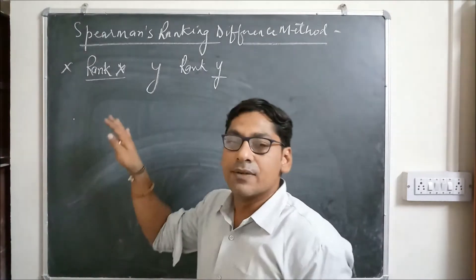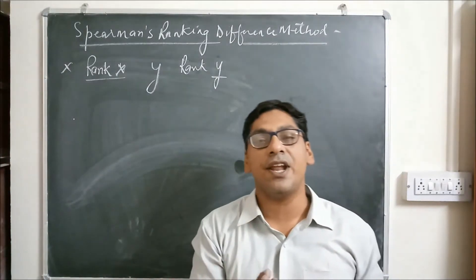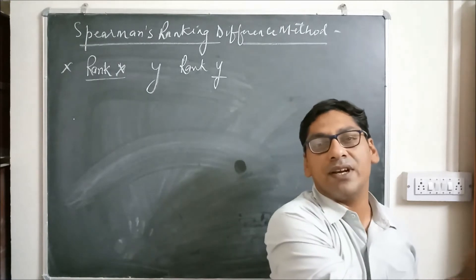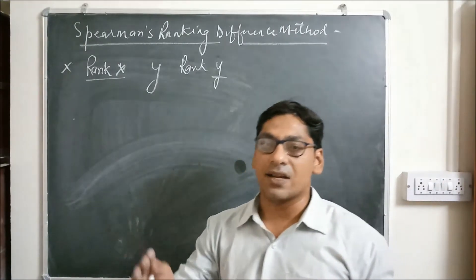How rank is given? The highest number is given 1 and then in ascending order 1, 2, 3, 4, 5, 6, 7, 8, just like we give ranks in the class.